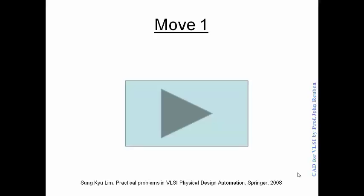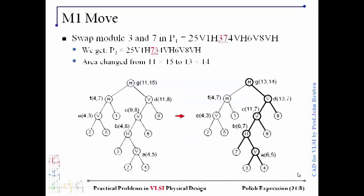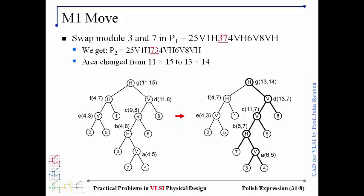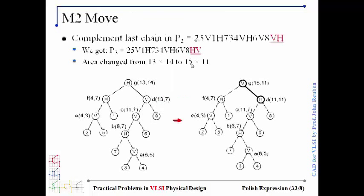In the last class we stopped at Move 1. We illustrated the first move where we swapped two operands, three and seven, and we saw the animation where the area was changed. This is the floor plan we have got now. We will see an example of the second move.